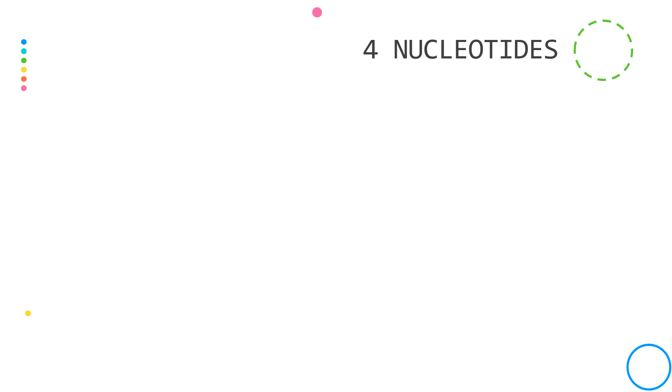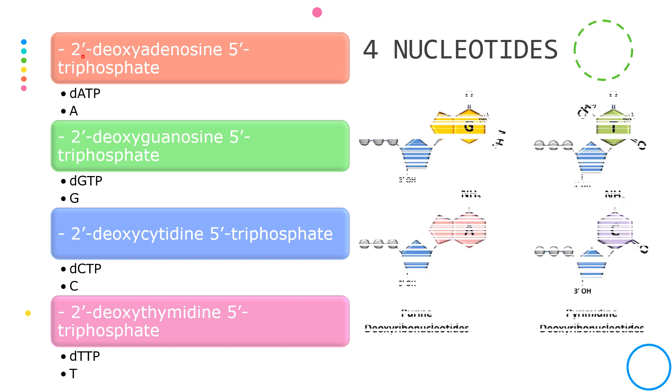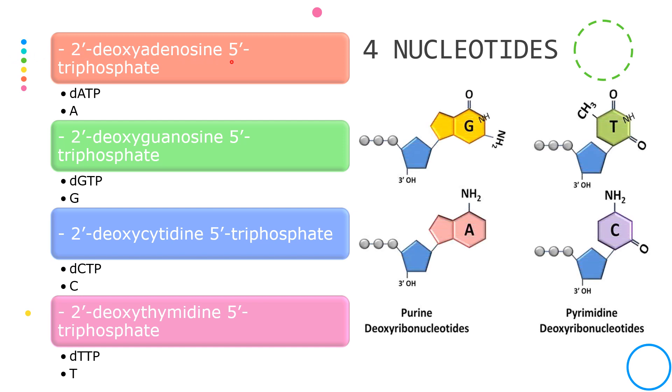The full names of the four different nucleotides that polymerize to form DNA are 2' deoxy adenosine 5' triphosphate, 2' deoxy guanosine 5' triphosphate, 2' deoxy cytidine 5' triphosphate, and 2' deoxy thymidine 5' triphosphate.